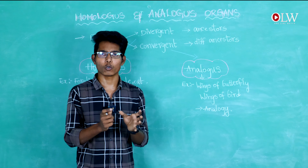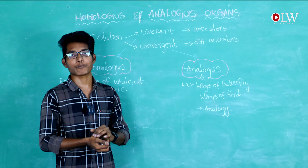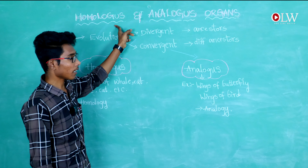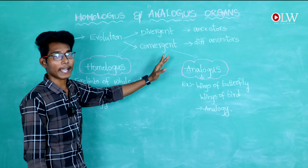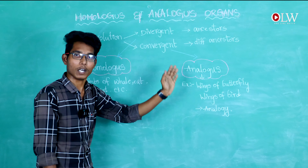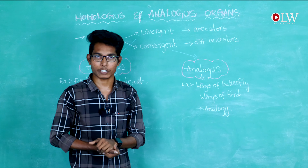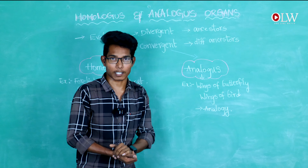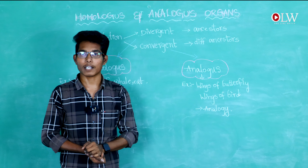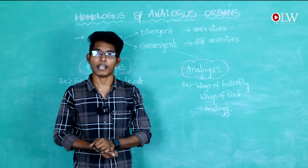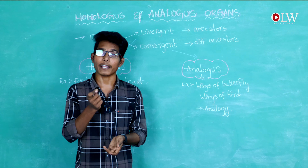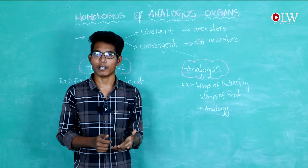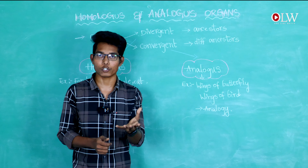Now, coming to the second type: analogous organs. We have learned about homologous organs and divergent evolution. The second type of organs is analogous organs. These are anatomical evidences from evolution — evidences of anatomical change through evolutionary processes.